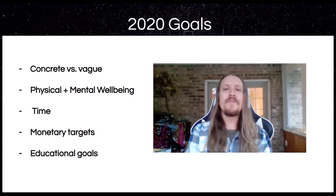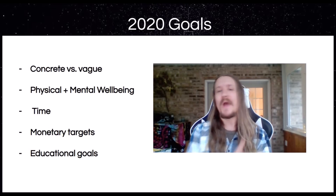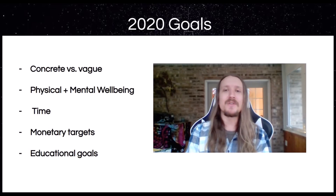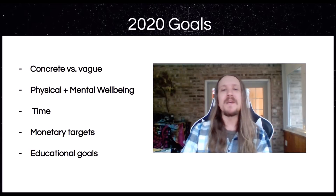Looking forward to 2020 goals — what's the difference between a concrete versus a vague goal? A vague goal is: I want to be a successful trader. That means something different to every individual. A concrete goal is: I want to make $10,000 trading in 2020, or I want to beat the S&P 500 trading in 2020. Those are goals you can write down and strive towards.